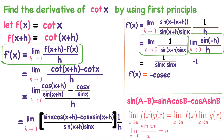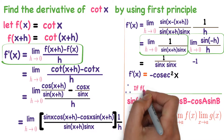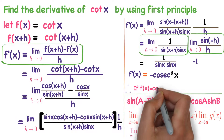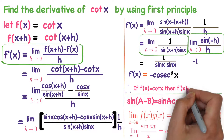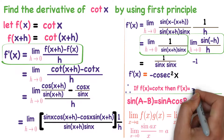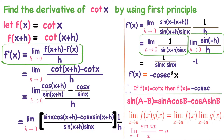Now, what is f dash of x? F dash of x is minus cosecant squared x. What is the conclusion? If f of x is cot x, then its derivative is minus cosecant squared x. From now onwards, we take this as a formula: derivative of cot x is minus cosecant squared x.